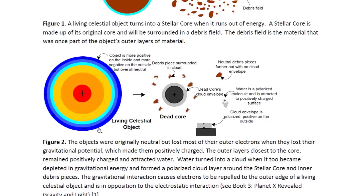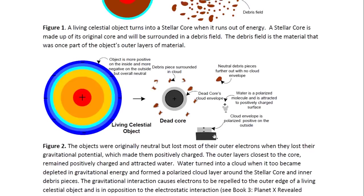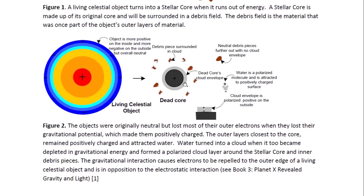The objects that turn into stellar cores were ones like this. When they died, they lost most of their outer layer where most of the electrons were. Some electrons would have gone in when the object died and lost all its gravitational energy. Whatever electrons were still part of the object or were able to get back to the core would have neutralized the core and the outer layers. The inner debris pieces will still be positively charged because most of the electrons wouldn't have reached them, while the outer pieces may be neutral. Water makes up the outer layer, this envelope.